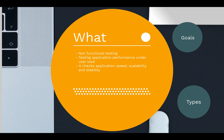We check scalability as well — if we increase or decrease any system resource like an app server, a database server, or any infrastructure component, how will the application behave in that case. Another aspect we check is stability: how stable the application is when a number of users are applied on the system. For example, if the application suddenly starts receiving more traffic, how stable will it be — that is also checked in performance testing.